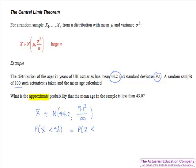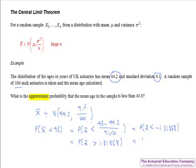Standardising this gives us the probability that Z is less than 43 minus the mean 44.2, divided by the standard deviation which is 9.1 over 10. Calculating this gives us the probability that Z is less than minus 1.31868. Recall that the probability of less than a negative number equals 1 minus the probability that Z is less than the corresponding positive number, giving us an approximate probability of 0.094.